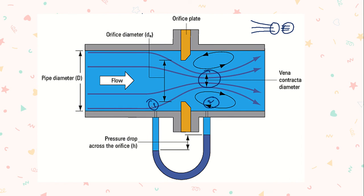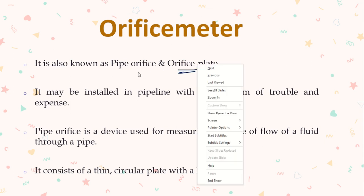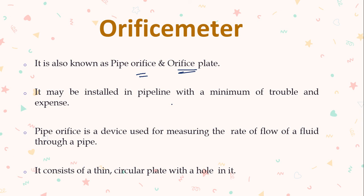One outlet of section one is connected to the pipe just before the orifice plate, and one outlet is connected to the manometer. One outlet of section two is connected at the vena contracta, and the second is connected to the second tapping of the U-tube manometer. The pressure difference is shown as a mercury level reading in the U-tube manometer. The orifice meter is also called an orifice plate or pipe orifice — it can be installed in any pipeline with less trouble, less expense, and less maintenance, and it calculates the rate of flow Q.